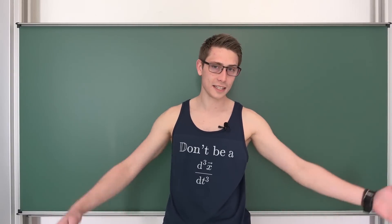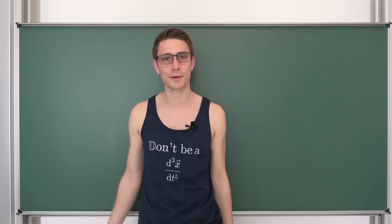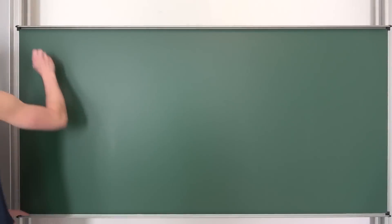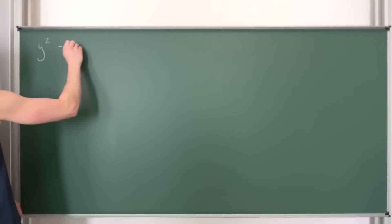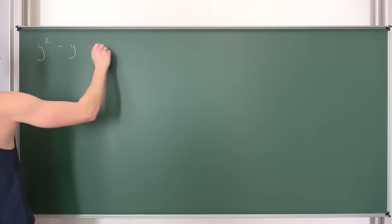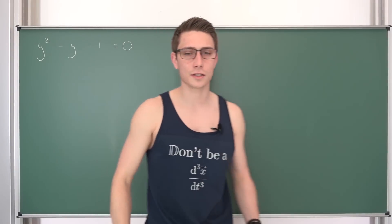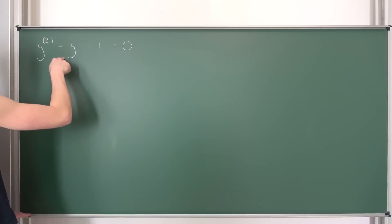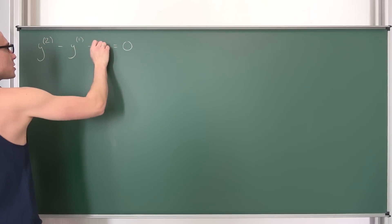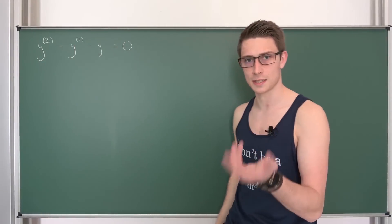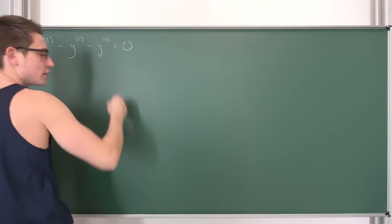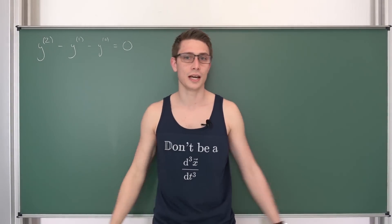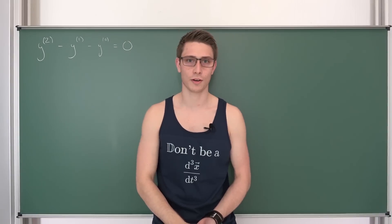We are going to take a look at yet another Fibonacci thing. I don't know why I like it, but I like making videos on that. Have you ever asked yourself what would happen if we were to take our Fibonacci boy — y squared minus y minus 1 equals 0 — and kind of upgraded it to the Fibonacci differential equation? Meaning: the second derivative of y minus the first derivative of y minus y equals 0. I hope you can see the similarities. So this is the zero of a polynomial; we are upgrading it to a differential equation. And what is going to be the solution? This is what we are going to find out today.